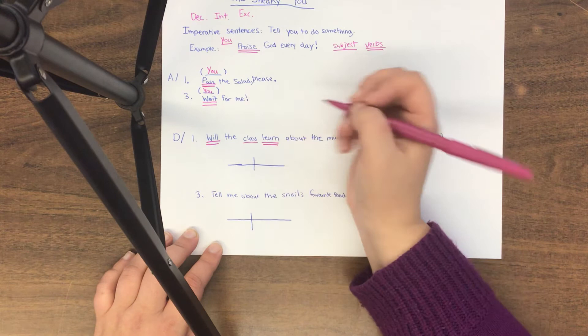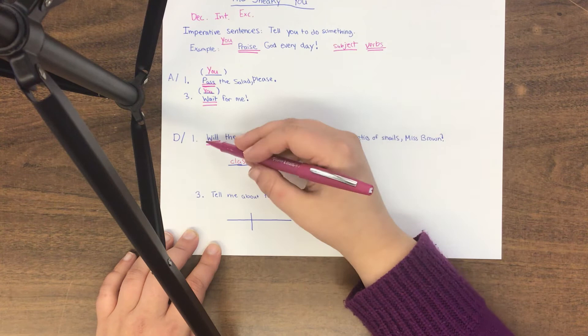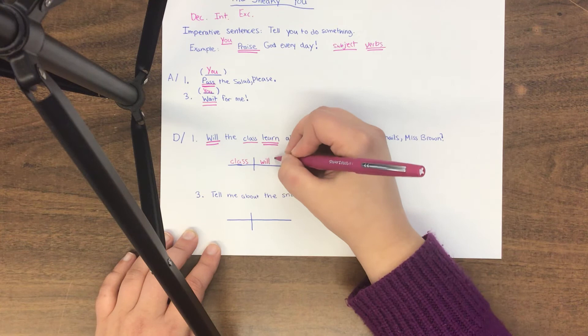When we diagram this, we start with the subject on this side, the class. And then we put both of our verbs on this side. Because they're not separated by an and, they go on the same line. So it looks like this. Class will learn. And I've diagrammed my sentence.